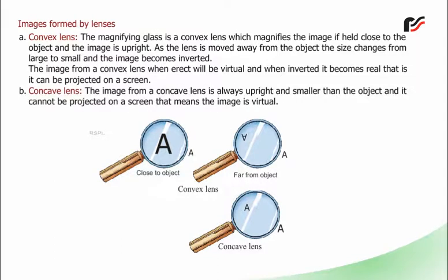Concave lens: The image from a concave lens is always upright and smaller than the object, and it cannot be projected on a screen. That means the image is virtual.